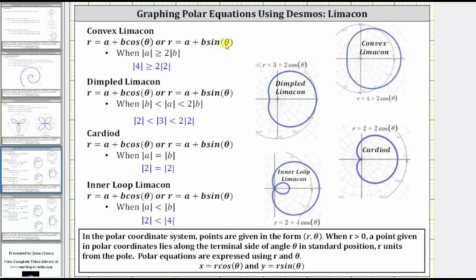We have a convex limaçon when the absolute value of a is greater than or equal to two times the absolute value of b, pictured here on the far right. We have a dimpled limaçon when the absolute value of a is greater than the absolute value of b and less than two times the absolute value of b, pictured here toward the middle. A cardioid is a special case of a limaçon when the absolute value of a equals the absolute value of b, pictured here on the far right. And finally, we have an inner loop limaçon when the absolute value of a is less than the absolute value of b, pictured here toward the middle.